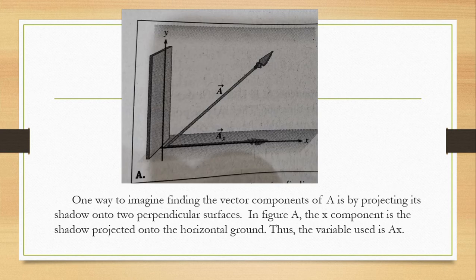One way to imagine finding the vector components of A is by projecting its shadow onto two perpendicular surfaces. In figure A, the x component is the shadow projected onto the horizontal plane. Thus, the variable used is Ax.